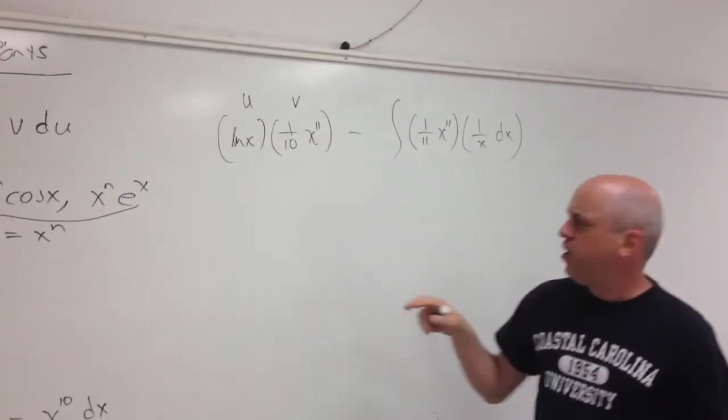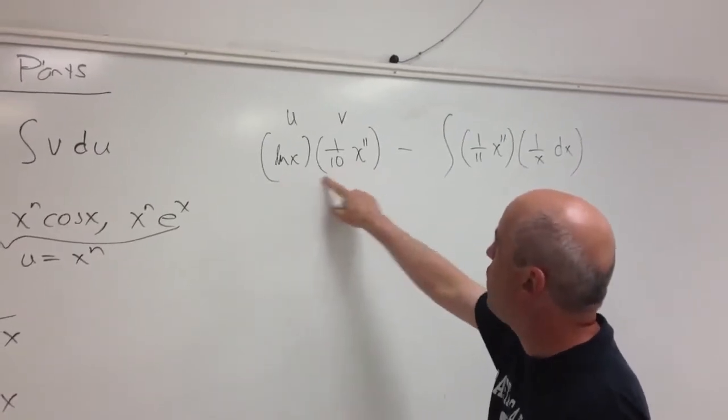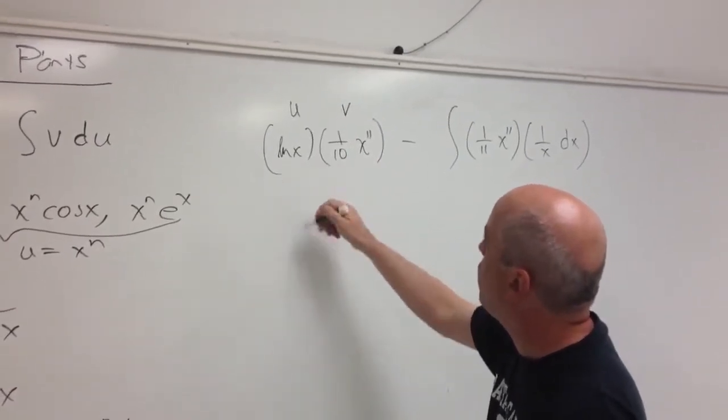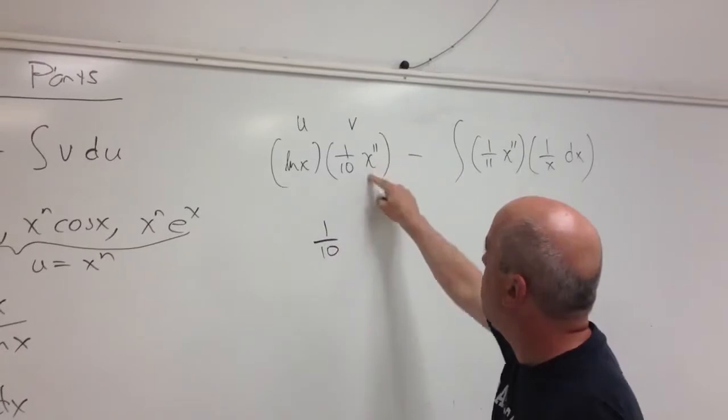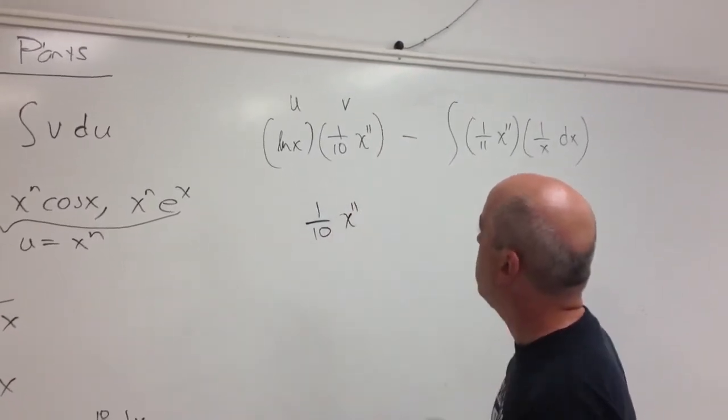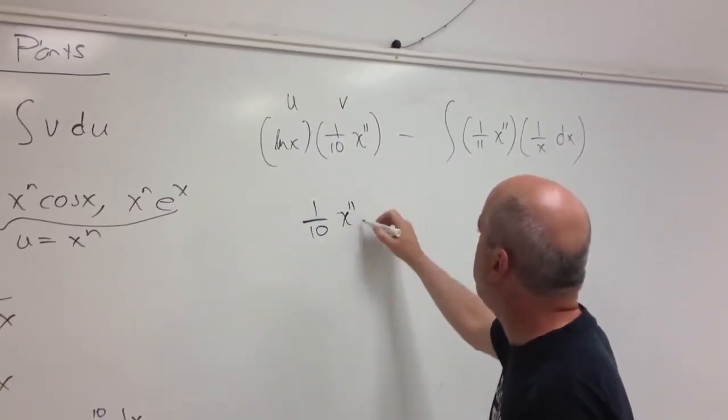Now first I want to clean this up a little bit. Typically when we have a product of several terms, we like to put the constant first, the power function next, and then anything else then.